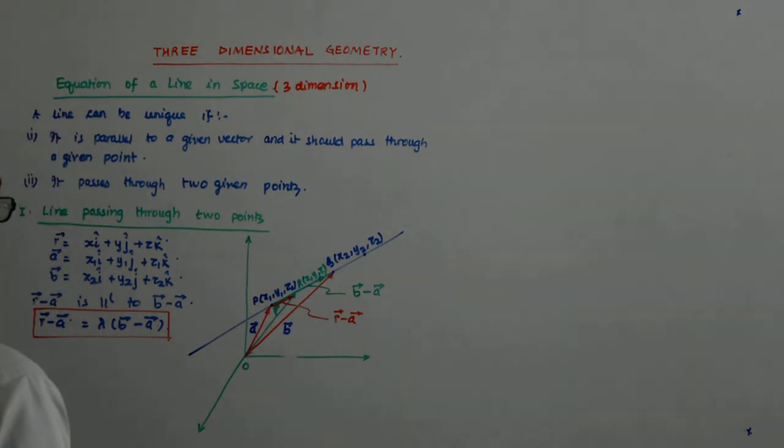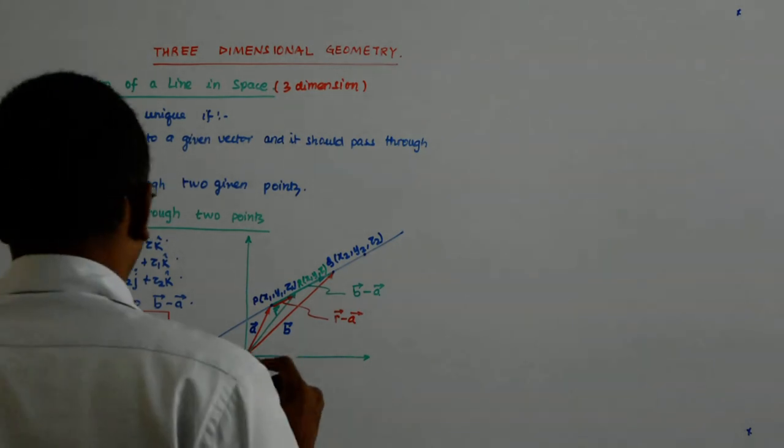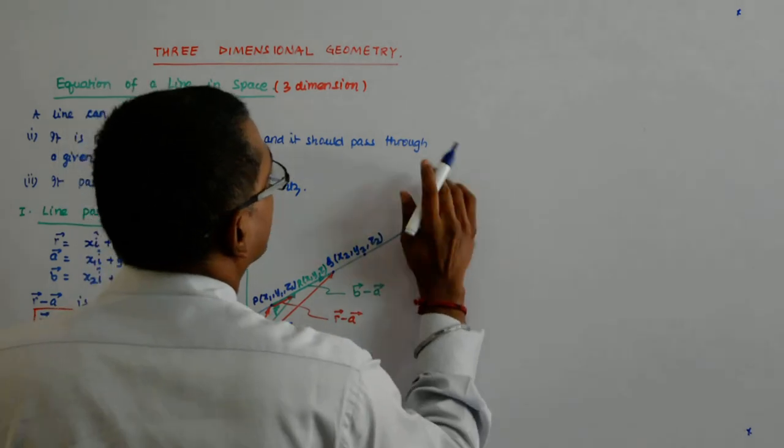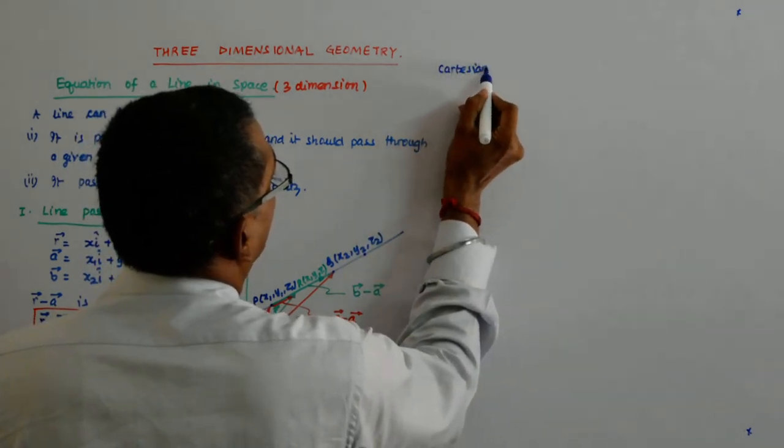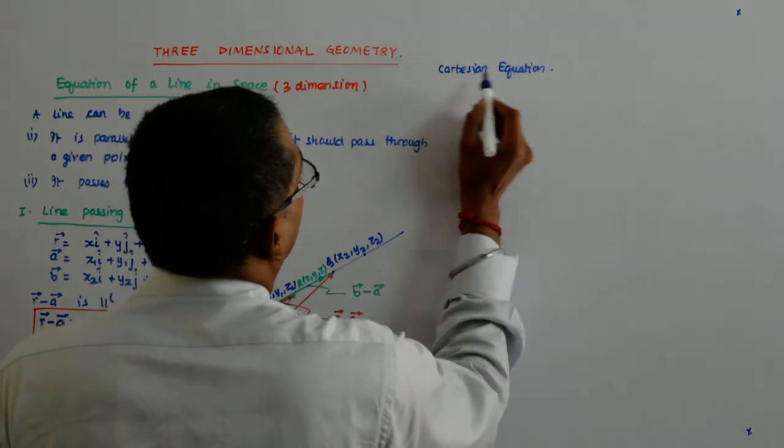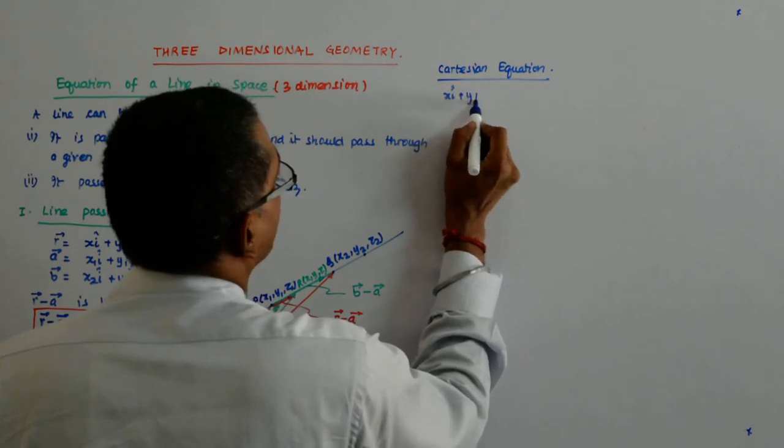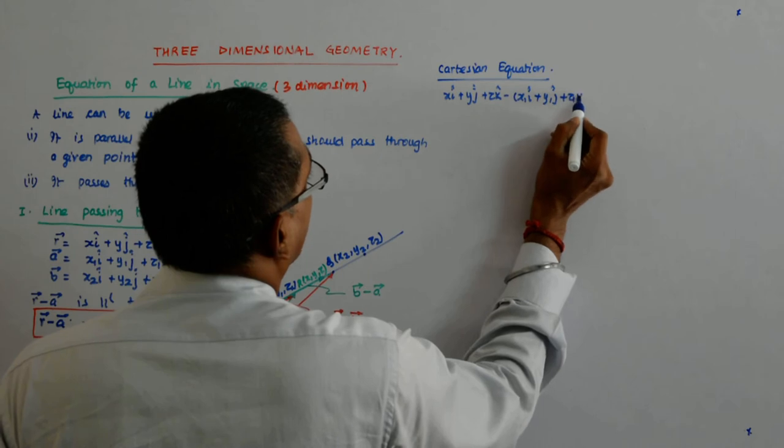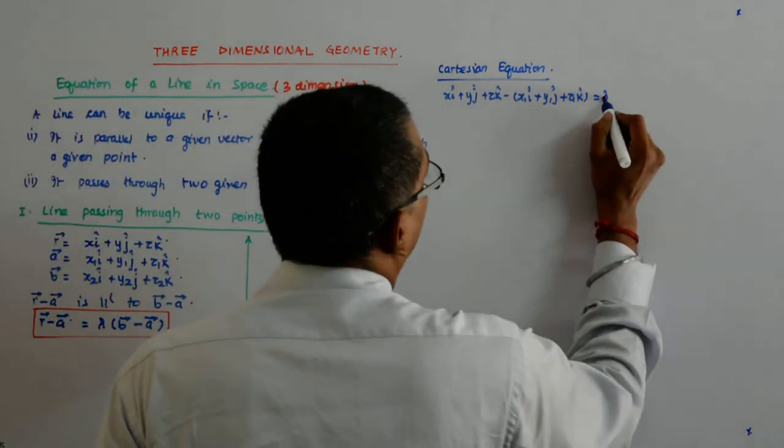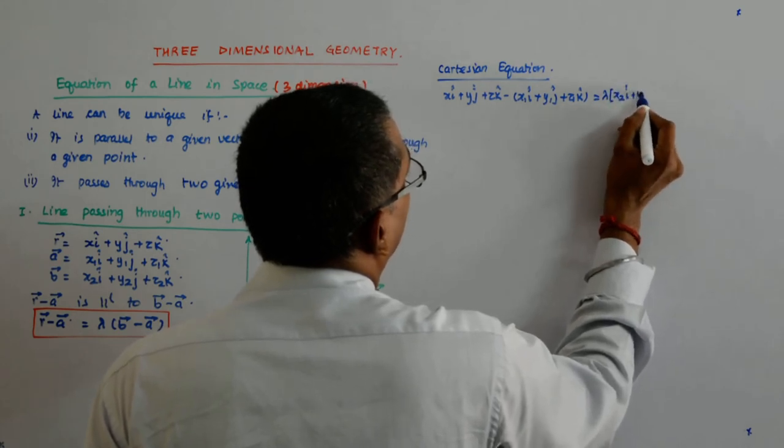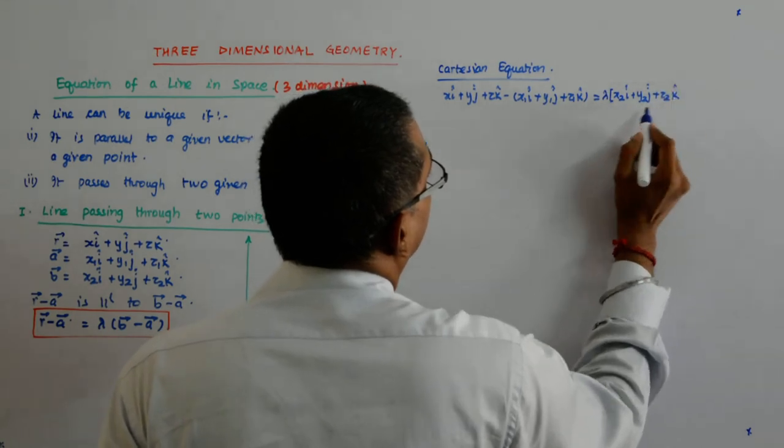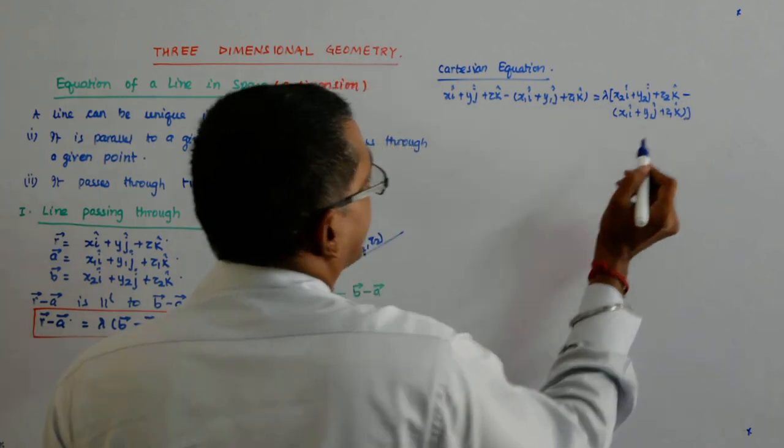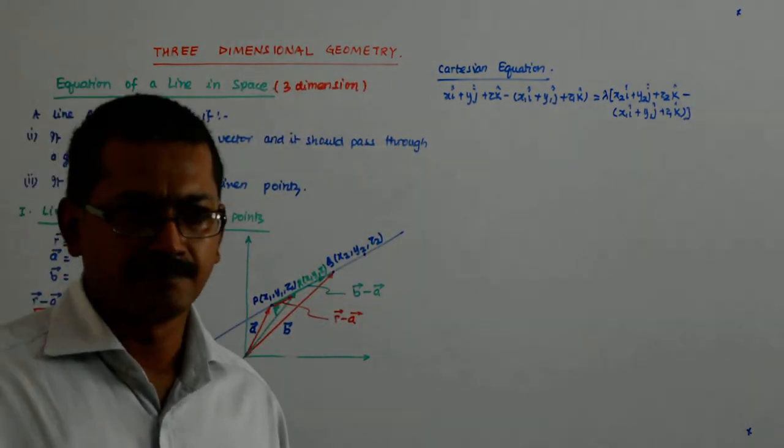Now, what is the scalar form of this equation? What do we do? I just start plugging in these values here. So I'll write it as Cartesian equation. So, it is X i cap plus y j cap plus z k cap minus X1 i cap plus y1 j cap plus z1 k cap. We get that point? Simple. Pretty simple.